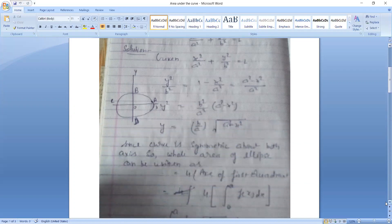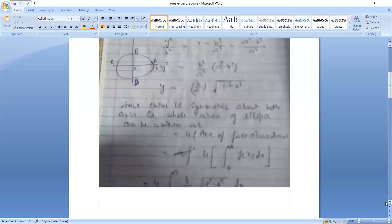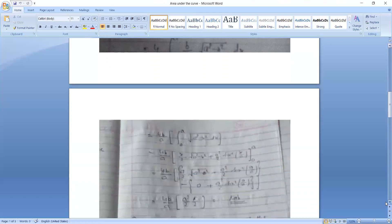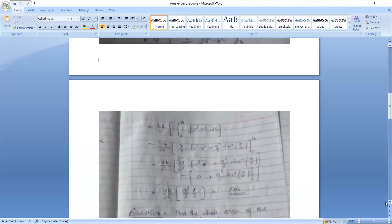Since the curve is symmetric about both axes, the whole area of ellipse can be written as 4 times the area of the first quadrant. This is 4 integral 0 to A. Now put the value of Y. So this will be 4 B upon A integral 0 to A root A square minus X square dx. Now by putting X is equal to A sin theta, we solve this integral. Then get the answer 4 B upon A, A square by 2 into pi by 2. This is pi AB.